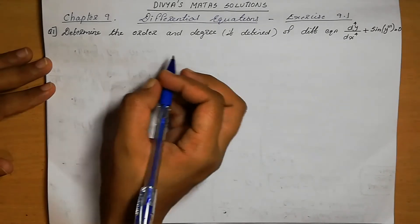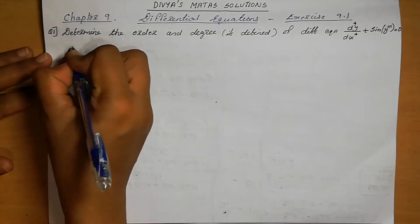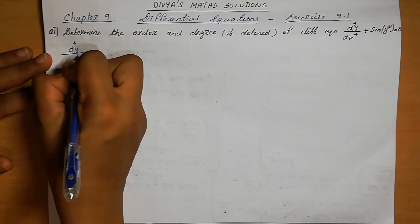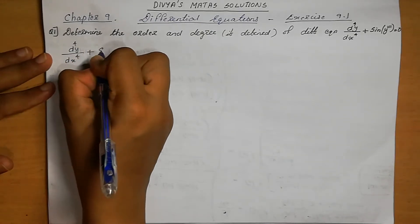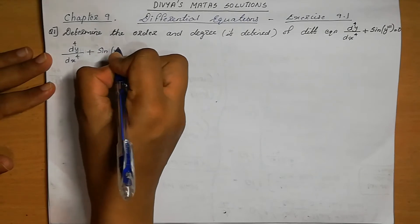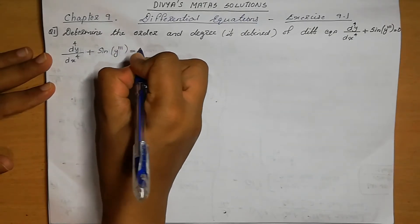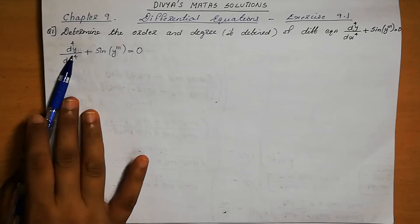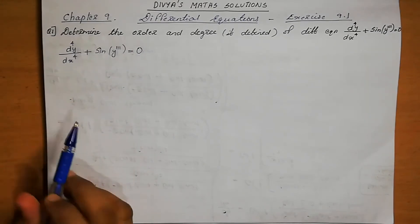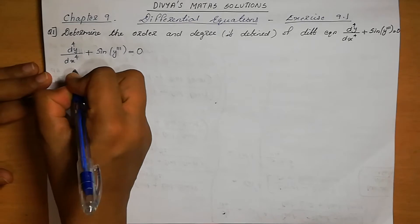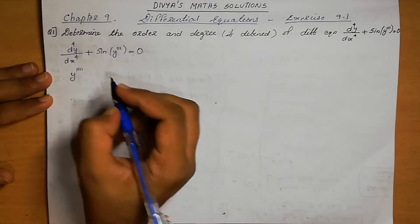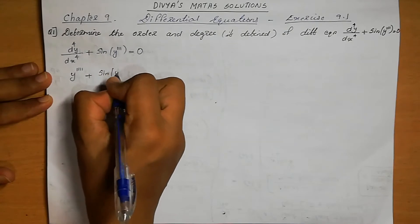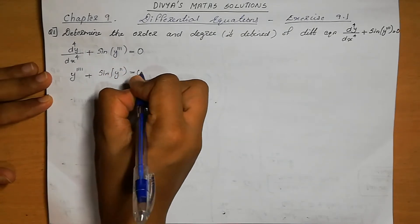The first given differential equation is d⁴y/dx⁴ + sin(y''') = 0. This can be rewritten as y'''' + sin(y'') = 0. Here, the derivative present is the fourth derivative.